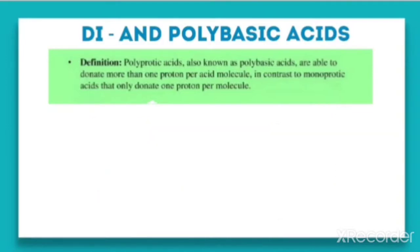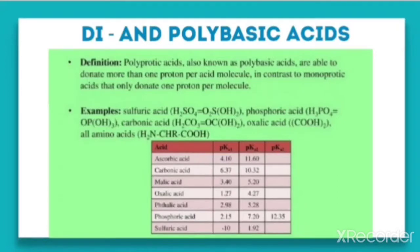As an example, sulfuric acid can be written as (HO)₂SO₂, showing two hydrogens available for donation. Phosphoric acid has three H⁺ for donation, carbonic acid has two H⁺ for donation, and oxalic acid also has two H⁺ for donation. These are some examples of polybasic acids.